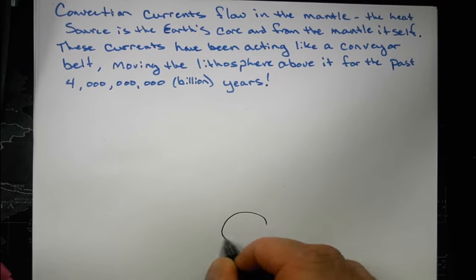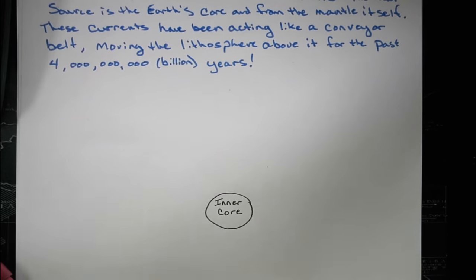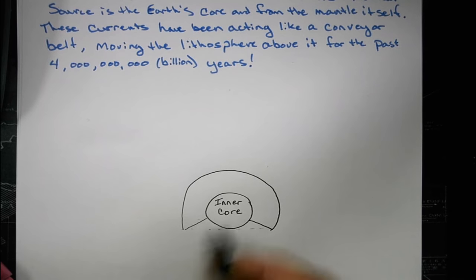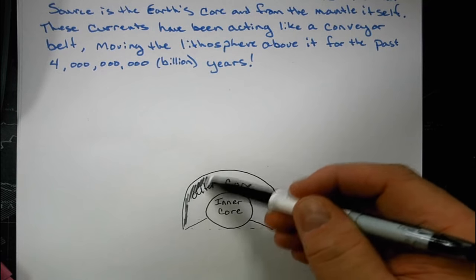So what does the model of our Earth look like? We have the inner core and the outer core made of iron and nickel, where the inner is solid and the outer is liquid iron and nickel.